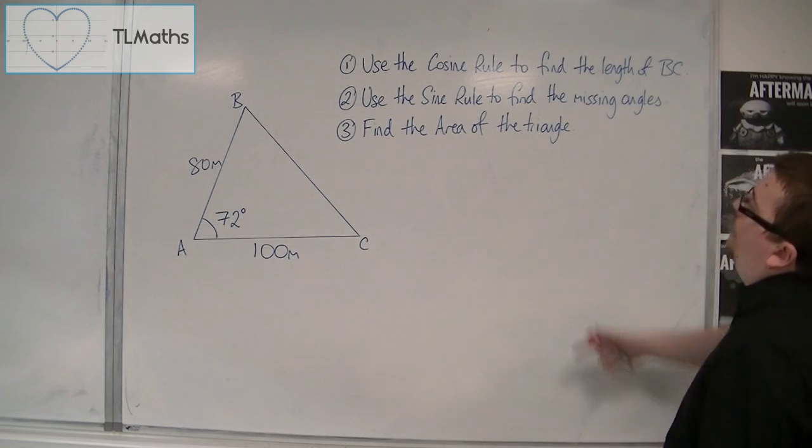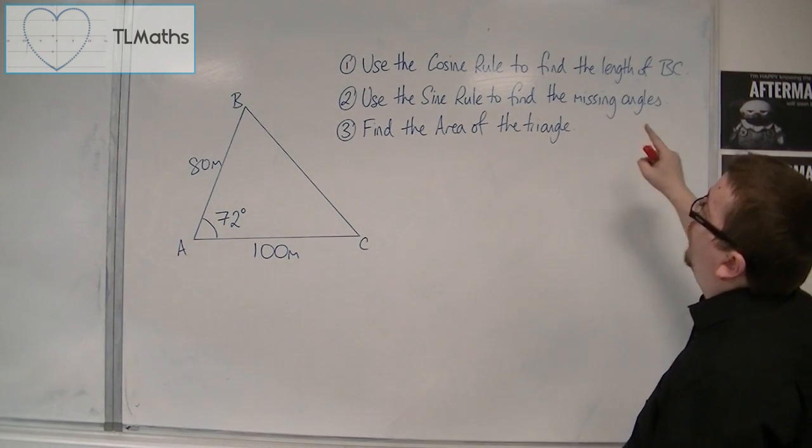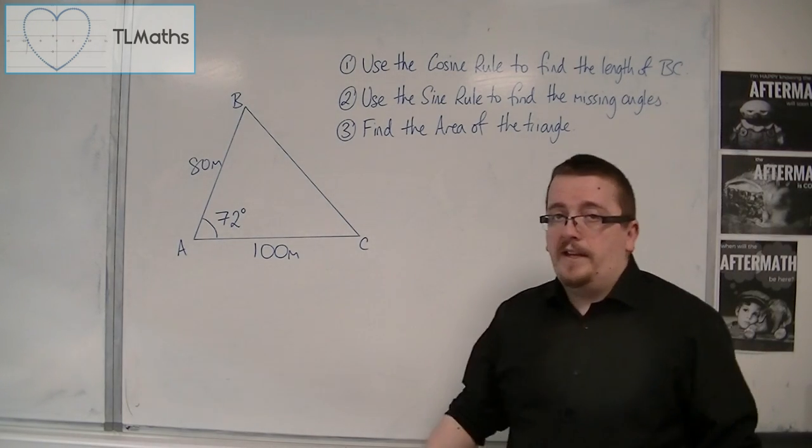plus find the area of this triangle. OK, so first thing I need to do is to use the cosine rule to find the length of BC.